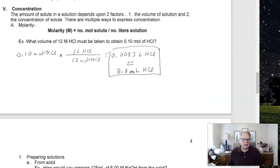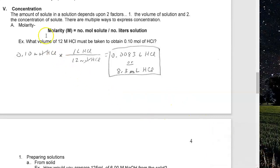What volume of 12 molar HCl must be taken to obtain 0.1 moles of HCl? You can't just weigh the solution to figure out how many moles are in there — molarity is useful here. I know the concentration is 12 molar, and I know I have 0.1 moles of HCl. Never start with your concentration; start with the other piece of information. So we write down 0.1 moles of HCl first.